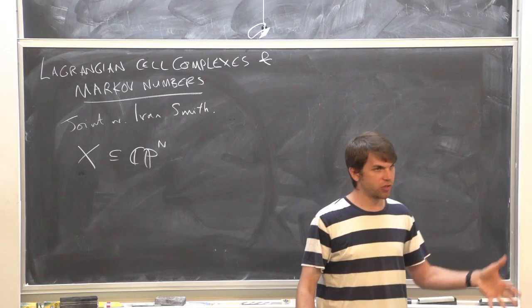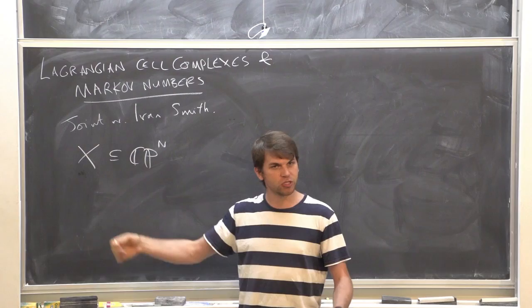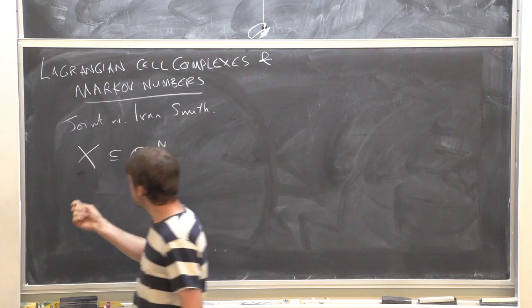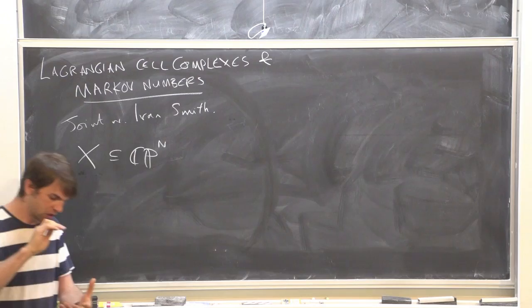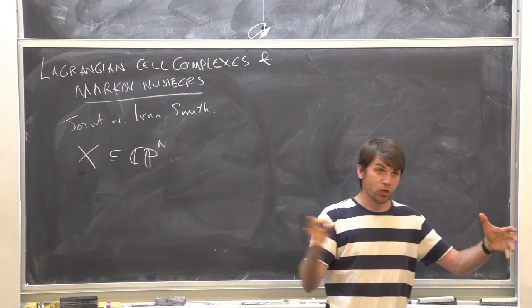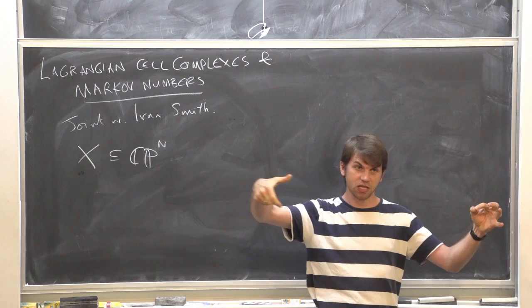The answer is obviously not everything, because you can deform the variety and change it without changing the symplectic form by Moser isotopy. So at best you get some sort of deformation invariance of this variety — for example, you can compute Gromov-Witten invariants this way. But what I want to focus on is the idea that if you have a variety and you deform it, eventually it can develop singularities, and the variety already knew about these singularities.